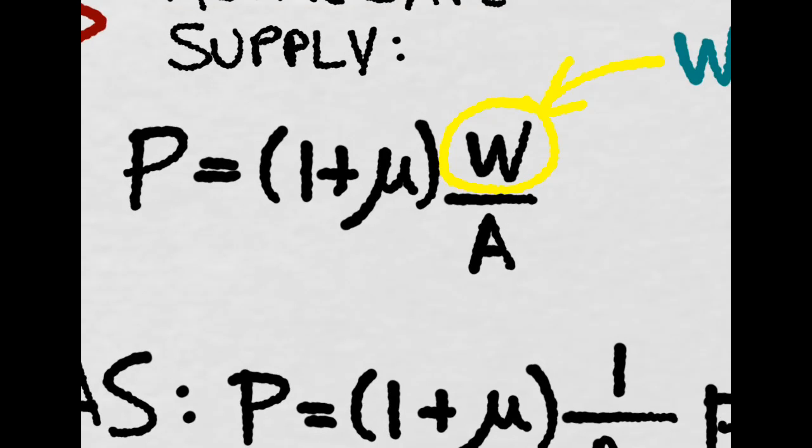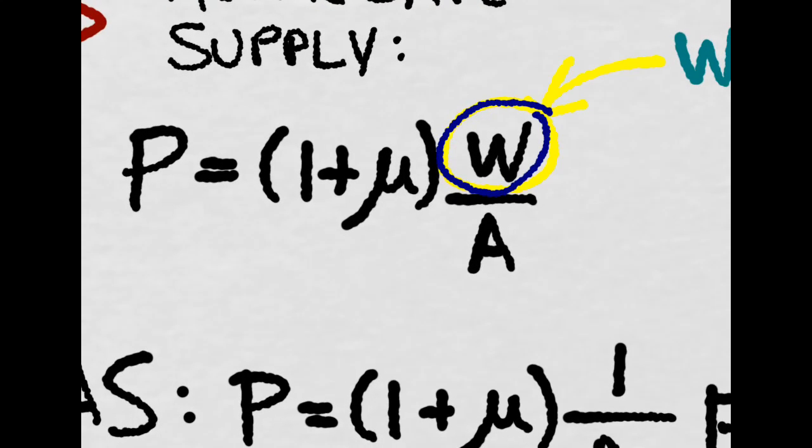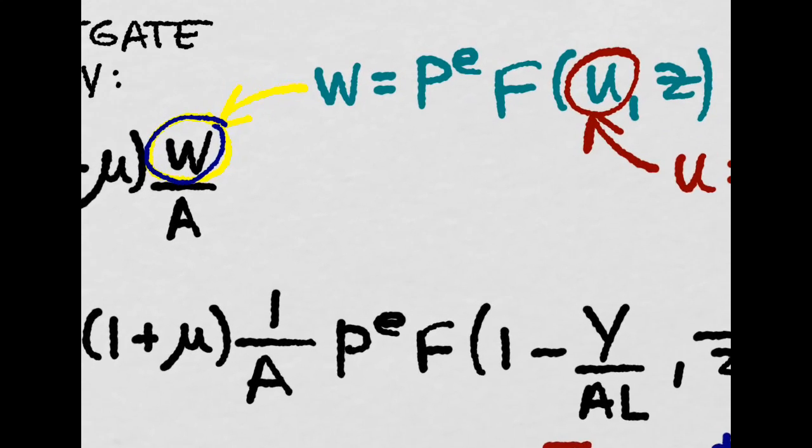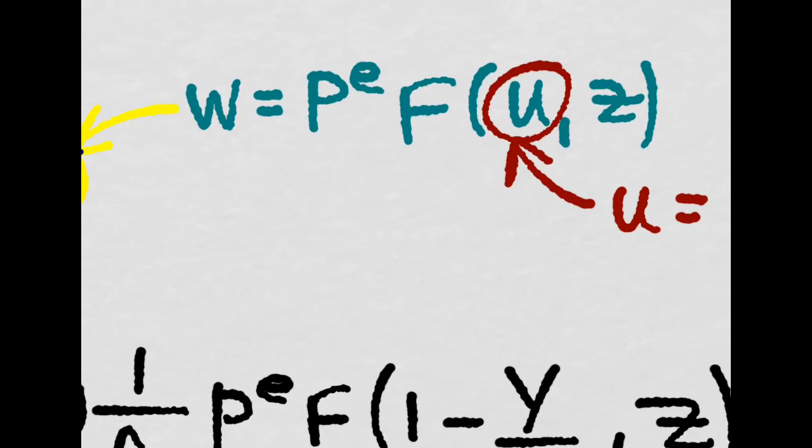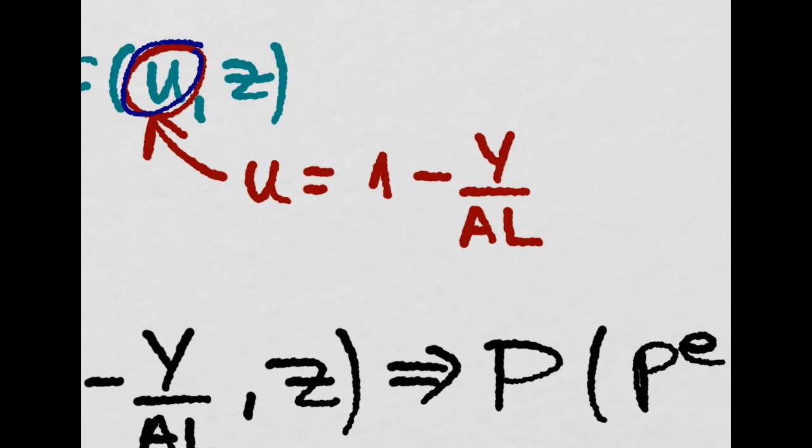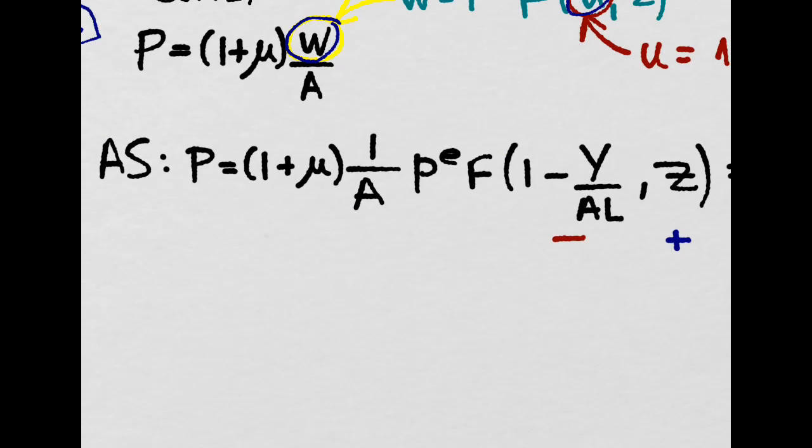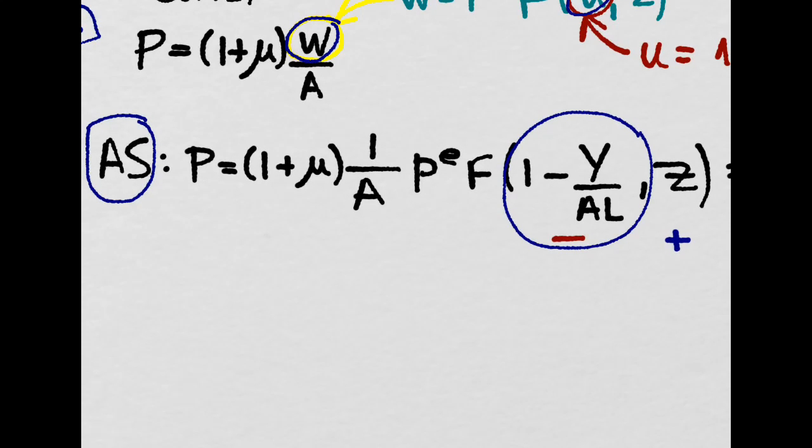Take the old price setting. Now change nominal wages by the expression we got in the wage setting. But instead of just writing unemployment, let's take unemployment as 1 minus output over AL. So we get this expression for the aggregate supply that depends negatively on this and positively on Z.